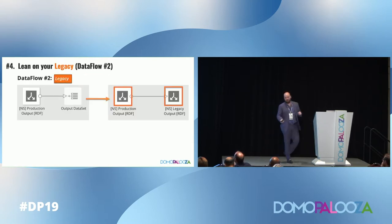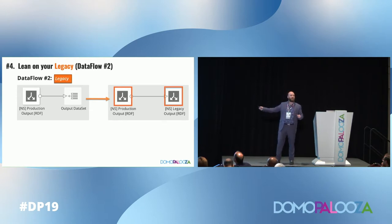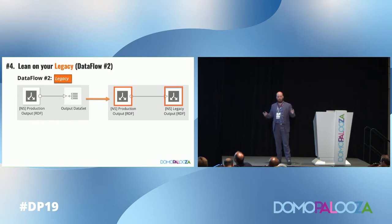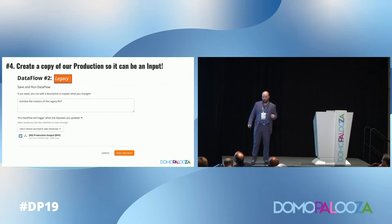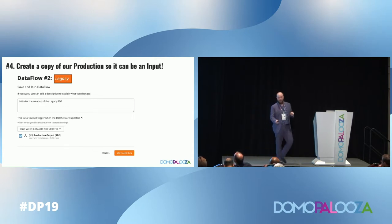Step four: lean on our legacy. We have this production output in a different data flow — this is our legacy data flow. I've initialized a new data flow and I'm doing the same thing as step one: making a copy of it because I can't have my output be my input. This is the easiest step — I have our production output, I make a legacy output. We create a copy of our production so it can be an input and initialize the legacy recursive data flow. This one can update when your production is updated.